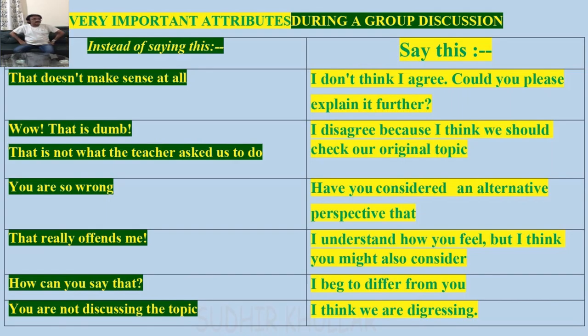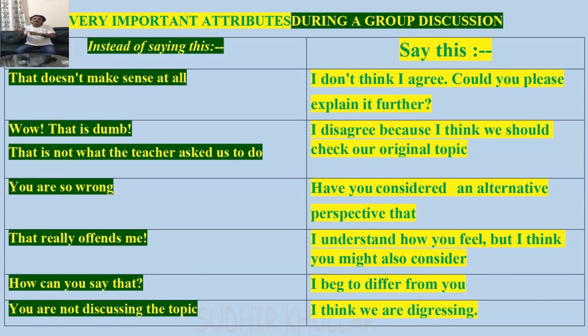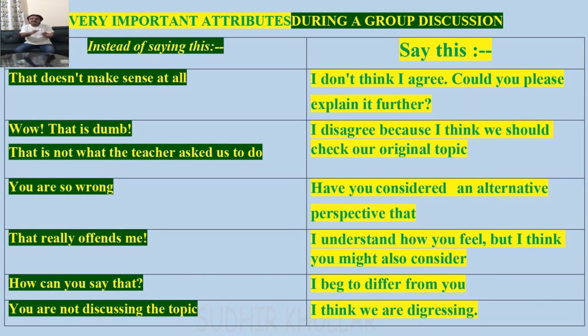Before concluding, some tips on how to express your views politely. Instead of 'that doesn't make sense at all,' say 'I don't think I agree — could you please explain it further?' Instead of 'wow, that is dumb,' say 'I disagree because I think we should check our original topic.' Instead of 'you are so wrong,' say 'have you considered an alternative perspective?' Instead of 'that really offends me,' say 'I understand how you feel, but I think you might also consider this.' Instead of 'how can you say that,' say 'I beg to differ from you.' Instead of 'you are not discussing the topic,' say 'I think we are digressing — we should come back to the track.'